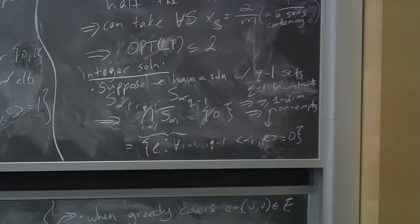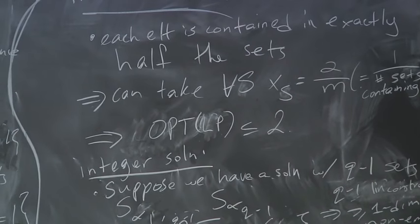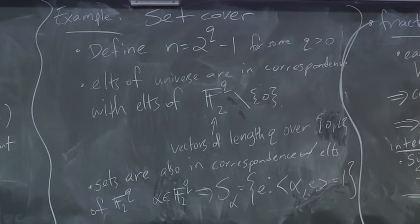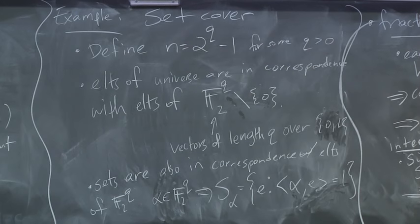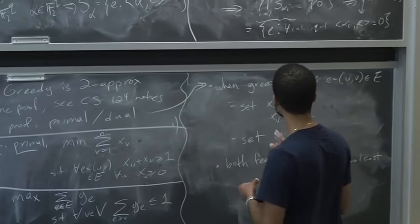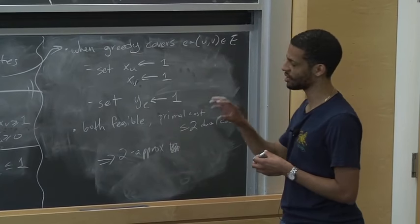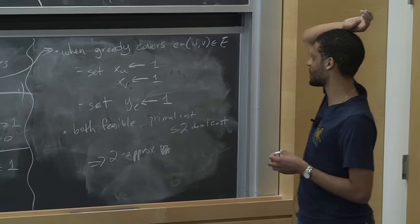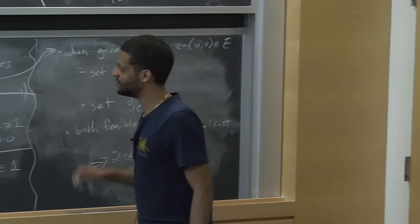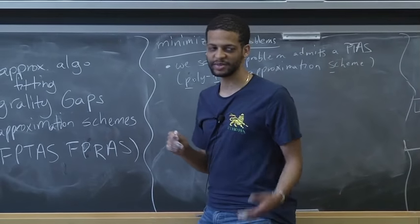For the set cover problem, it's known — this is a theorem due to Feige in '98 — that you can't do better than natural log of n unless you can solve SAT in time n to the log log n or so. The best known algorithms for SAT run in exponential time in n, so n to the log log n is way cheaper. This gives strong evidence that we don't expect to beat natural log of n. The proof uses the PCP theorem — Probabilistically Checkable Proofs.